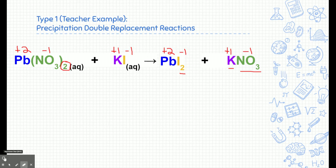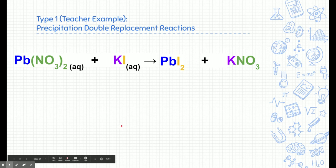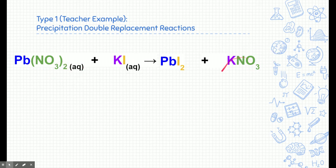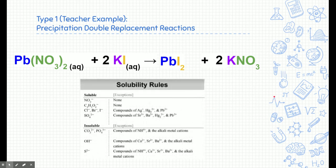We're done with the double replacement step, but we're not done with the reaction. There's a discrepancy in balancing: there's one iodine on the reactant side but two on the product side, and two nitrates on the reactant side but only one on the product side. We need to add coefficients in front of certain compounds to balance the equation. If you're unsure how to balance reactions, check out resources on Schoology or YouTube videos on balancing reactions.